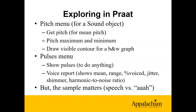There is also a pulses menu where PRAAT attempts to identify exactly where the individual periods of the vibration of the vocal folds are, and from that it can figure out whether something is voiced or not. In that menu you can produce a voice report which shows a whole bunch of different measures of the voice, including jitter, shimmer, and harmonic-to-noise ratio — some of the fancier measures of the speech signal.